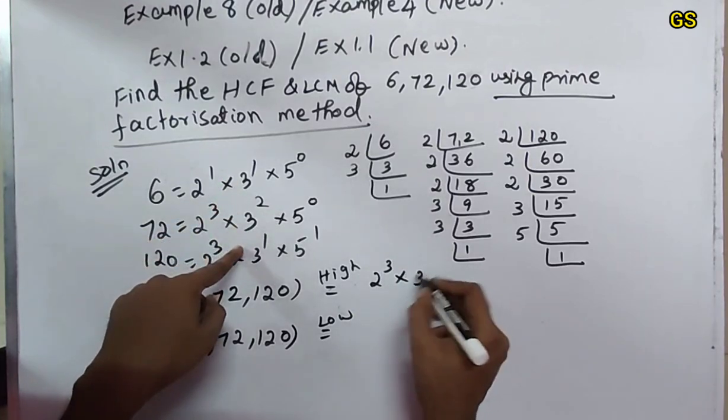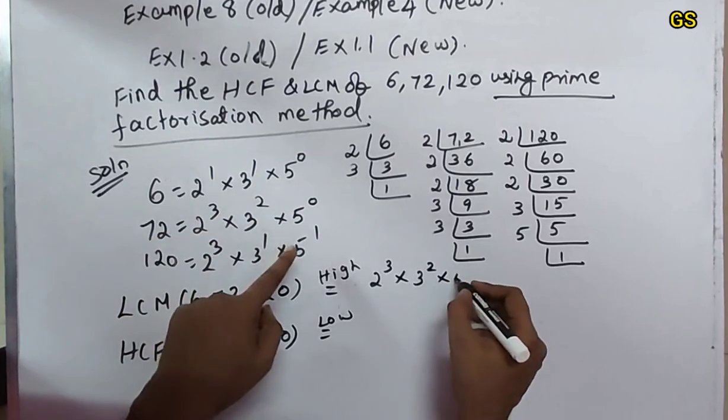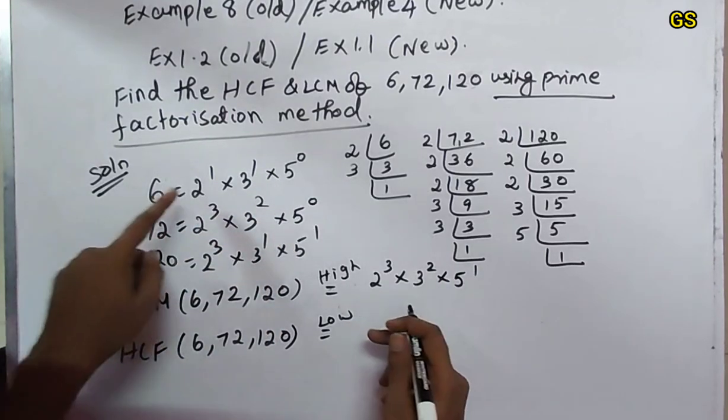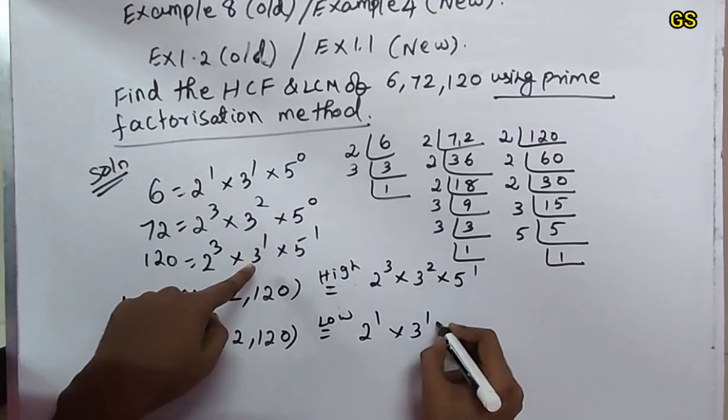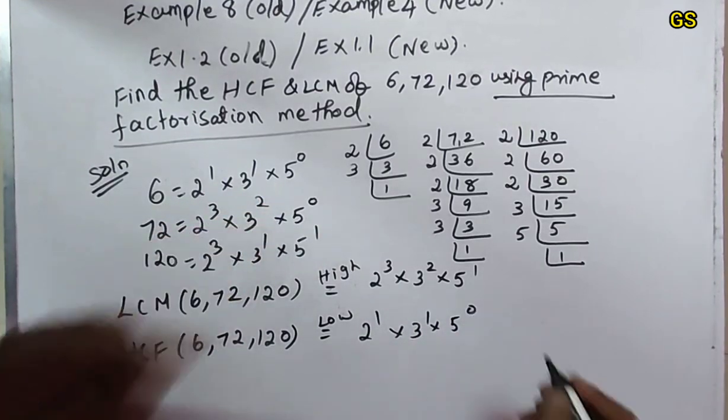For 2, the high is 2 to the power 3. 3 will be 3 to the power 2. 5 will be 5 to the power 1. For HCF low values: 2 will be 2 to the power 1, 3 will be 3 to the power 1, 5 will be 5 to the power 0.